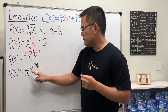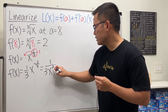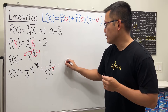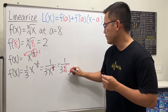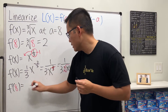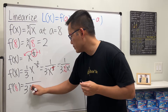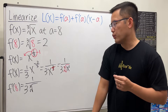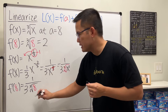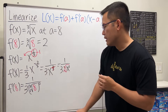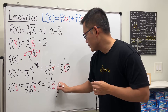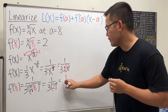We rewrite this by moving the negative exponent to the denominator: 1 over 3x to the 2/3 power. The denominator 3 becomes the cube root, so this is 1 over 3 times the cube root of x squared. Plugging in 8: f prime of 8 is 1 over 3 times the cube root of 8 squared. The cube root of 8 is 2, then squared is 4, so we get 1 over 12.